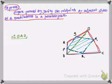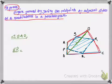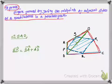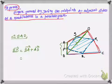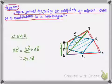If I look into triangle BAD, then by applying the triangle law of vector addition, what I get is vector BD. Moving from point B to point D is the same as moving from B to A and then from A to D. So I can write vector BA plus vector AD. This is what we can write from the triangle law of vector addition.